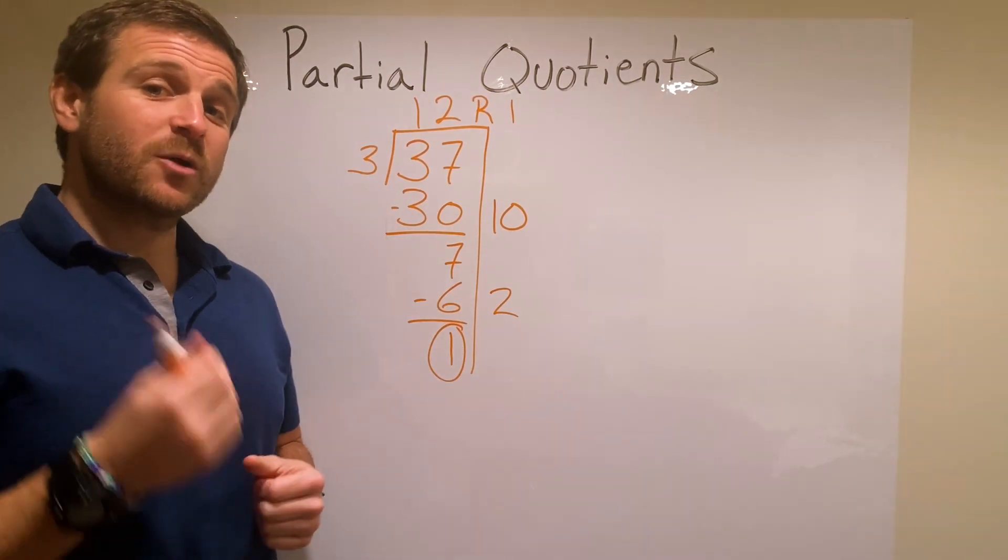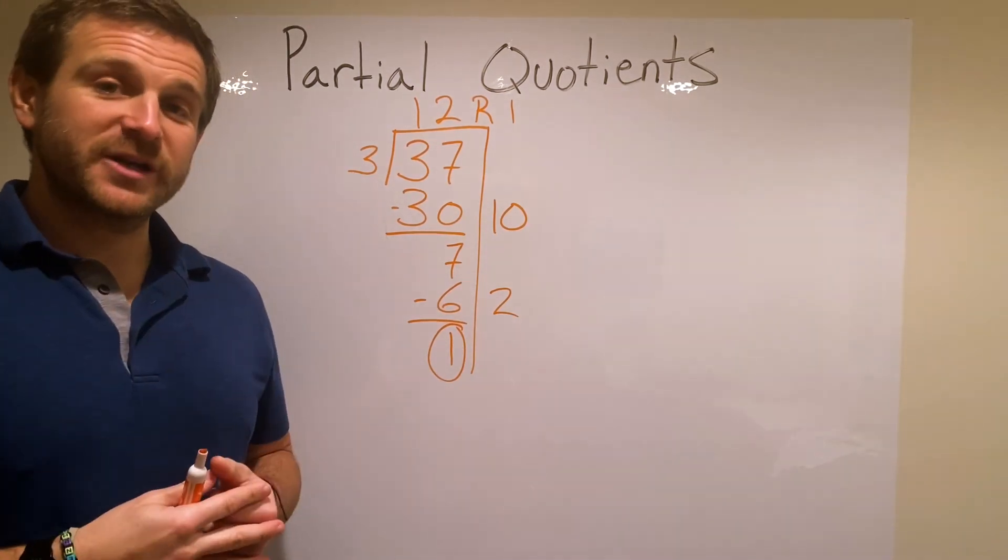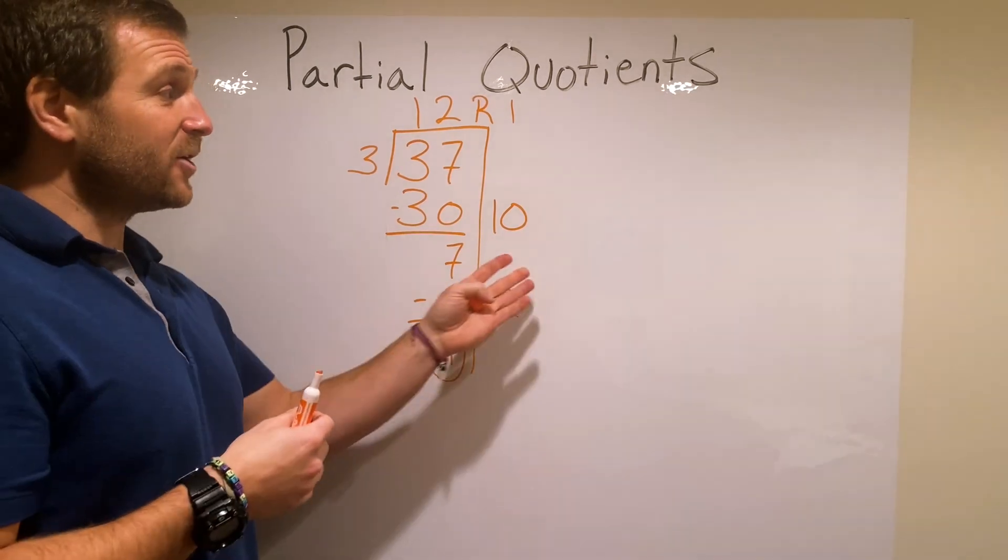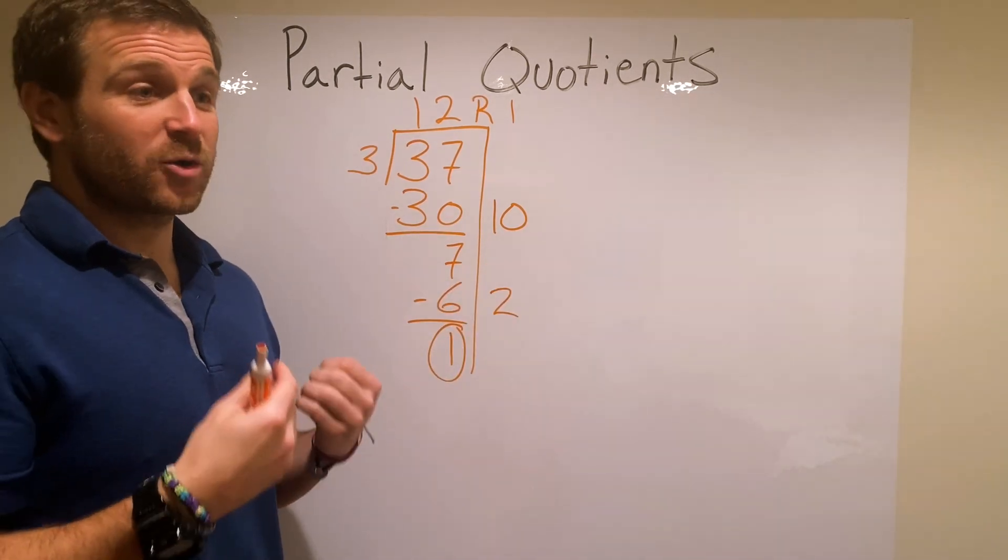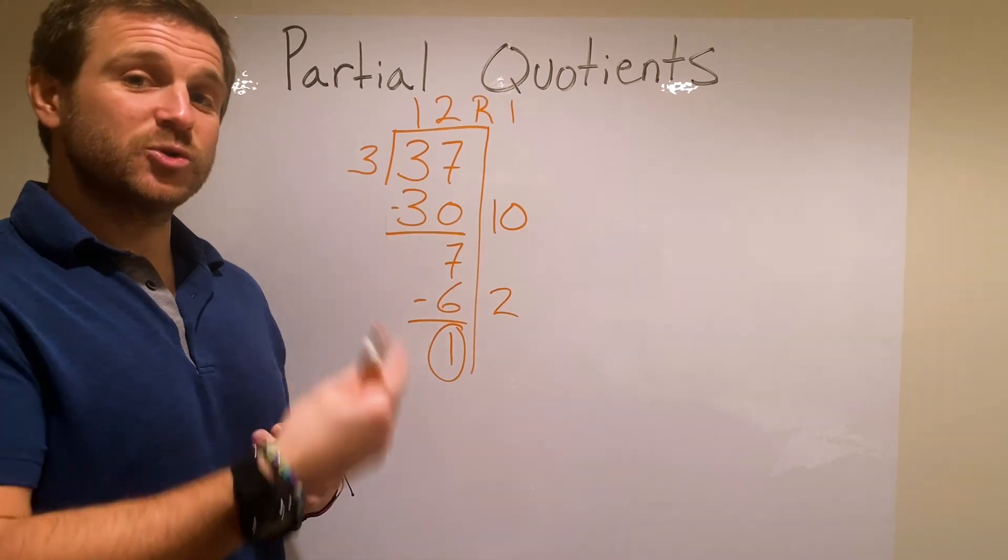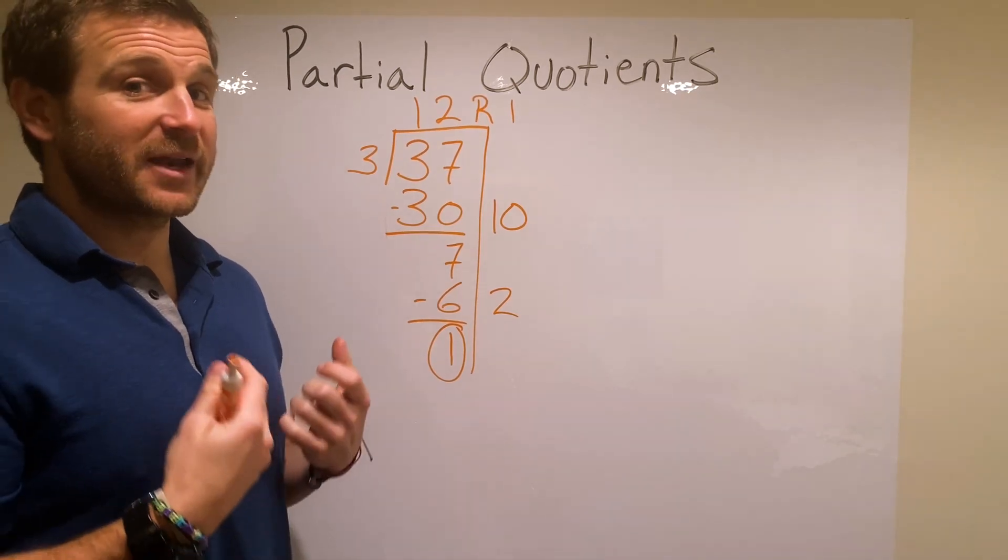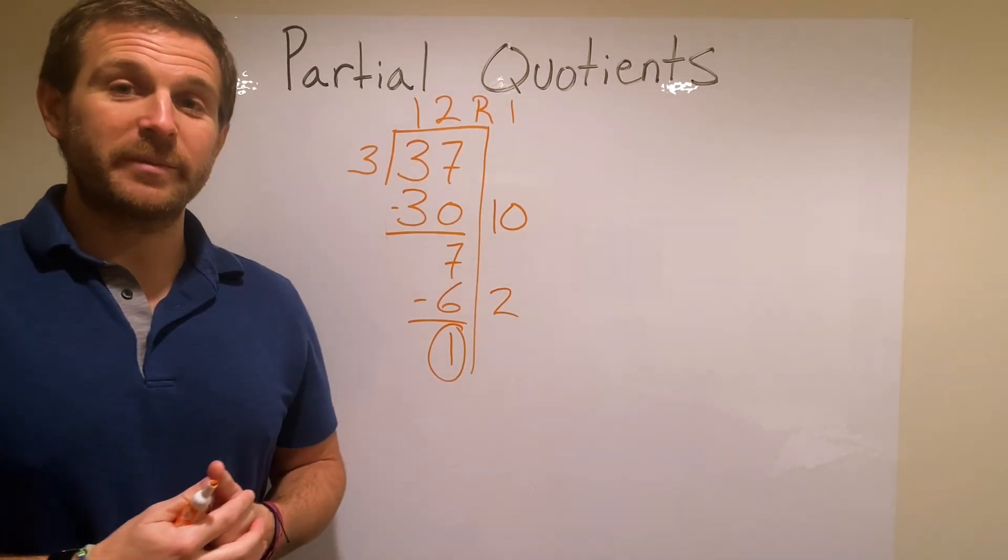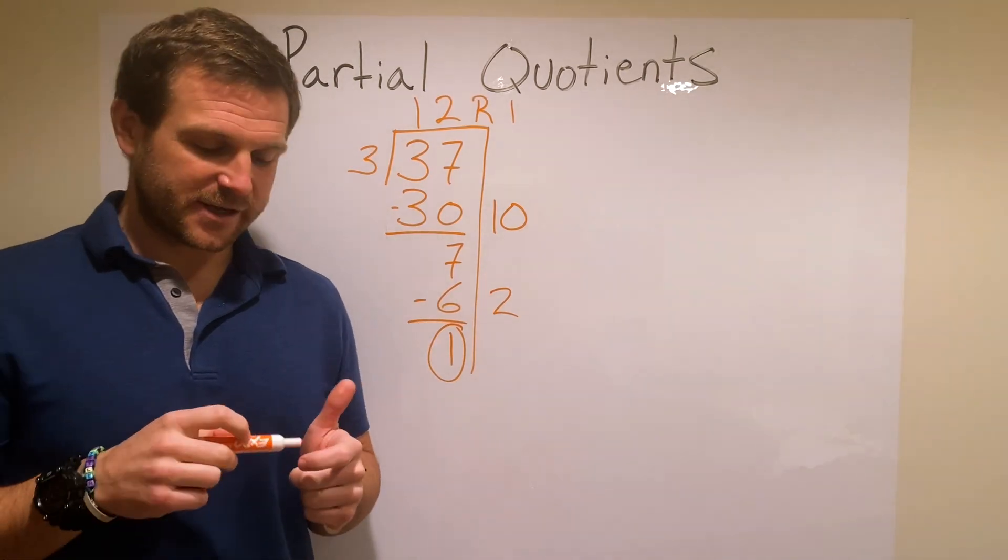That's partial quotients, a really simple alternative to standard algorithm. And also I think a great way, a great step forward into teaching standard algorithm. So something that all students should have in their toolbox before they get into the standard algorithm.